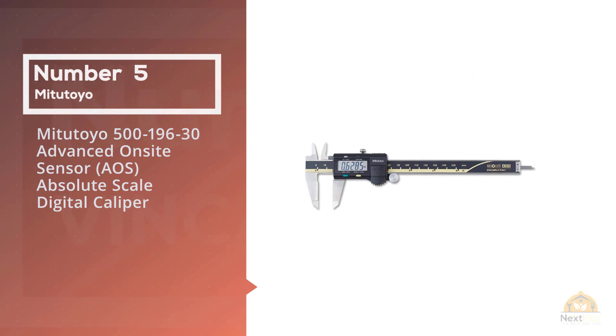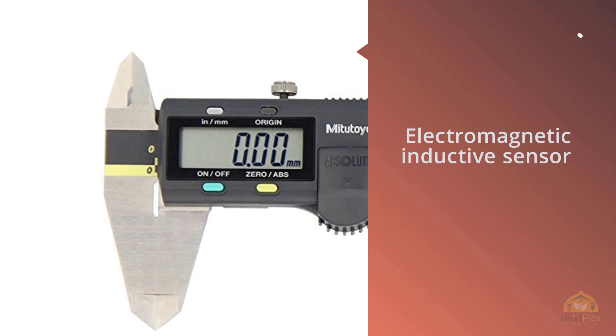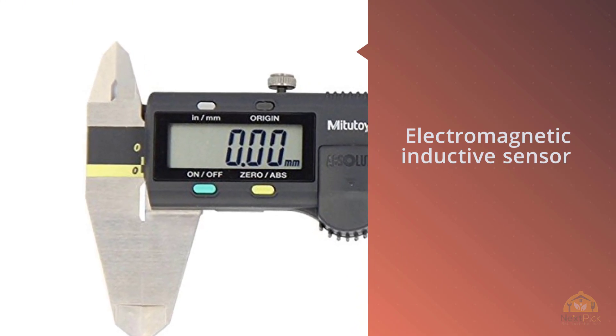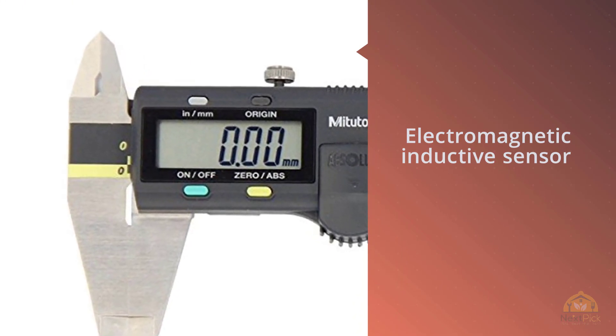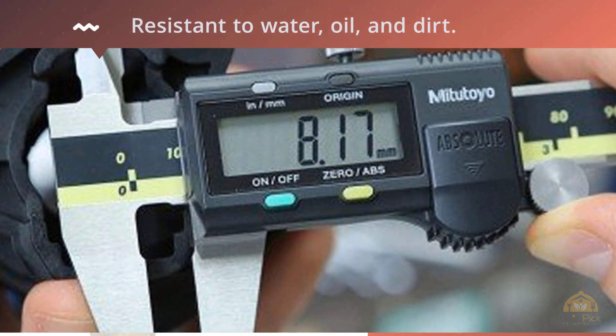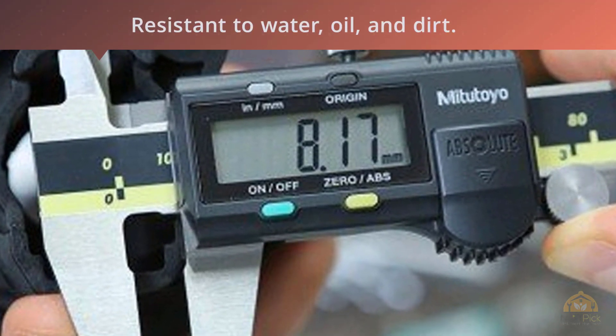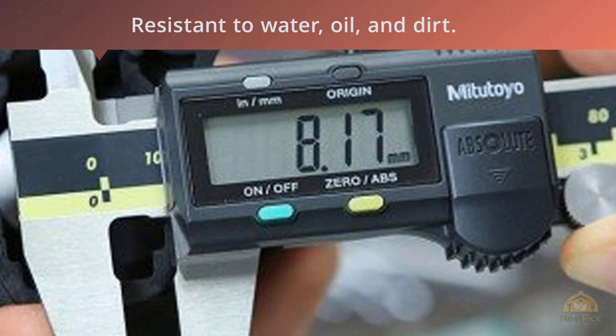Number five: Mitutoyo 500-196-30 Advanced On-Site Sensor AOS Absolute Scale Digital Caliper. The Mitutoyo 500-196-30 advanced on-site sensor absolute scale digital caliper includes an electromagnetic inductive sensor that's resistant to water, oil and dirt. The stainless steel caliper includes a digital LCD display and can convert between inches and millimeters.